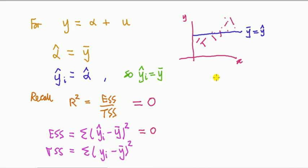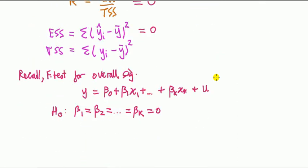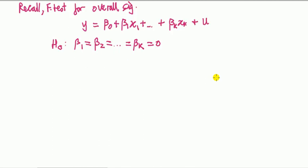Next, I want to actually compare this R squared of zero to link it back to the F test for overall significance. I've done problems on that, earlier problem sets. So, let's look at this multiple linear regression model.